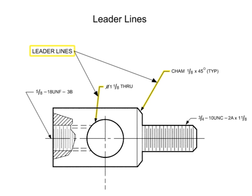Leader lines are used to indicate a part or portion to which a number, note, or other reference applies, and are typically unbroken lines terminating in an arrowhead. The most common use is when a dimension won't fit within the dimension line.